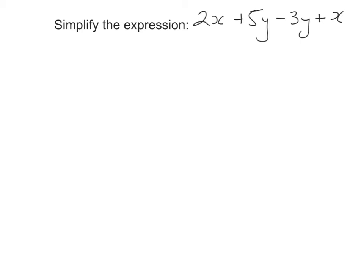We're going to collect the like terms. We have a 2x and an x, so 2x plus x gives me 3x. And we have a 5y and a minus 3y, so plus 5y minus 3y gives me plus 2y.